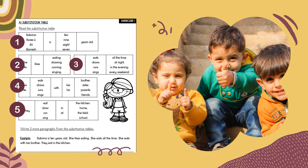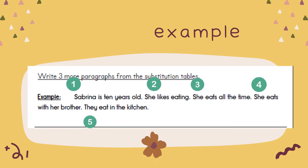We have a table. Read the substitution table. We have 1, 2, 3, 4, 5, and then we can write from the table. Let's take a look for example. We have 5 sentences from the table.